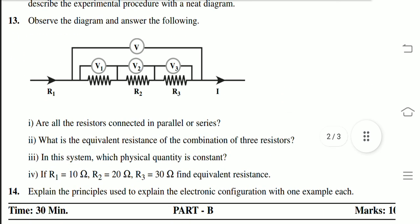Observe the diagram and answer the following questions. Are all the resistors connected in parallel or series? What is the equivalent resistance of the combination of three resistors? In this system, which physical quantity is constant? If R1 equals 10, R2 equals 20, R3 equals 30, find the equivalent resistance.